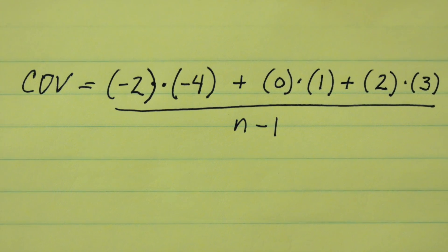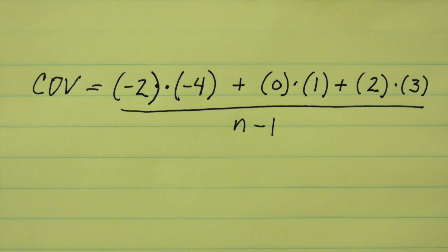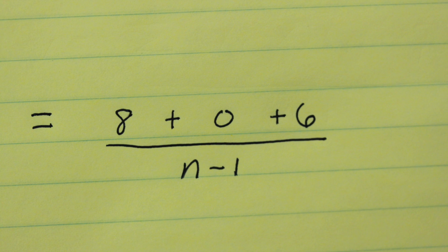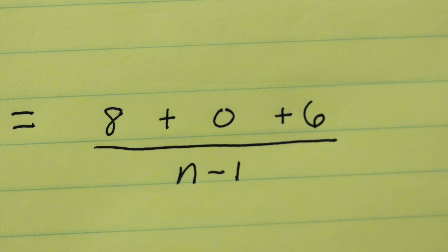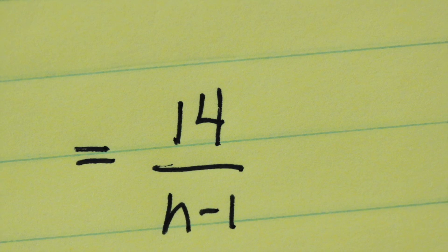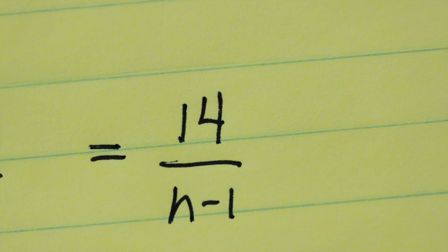Minus 2 times minus 4, 0 times 1, 2 times 3 divided by n minus 1, which is 8 plus 0 plus 6 over n minus 1, which is 14 over n minus 1.